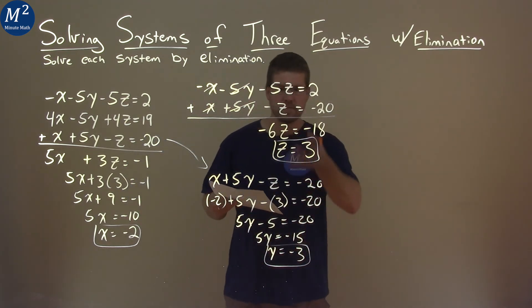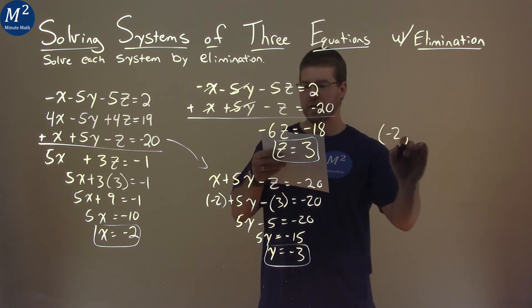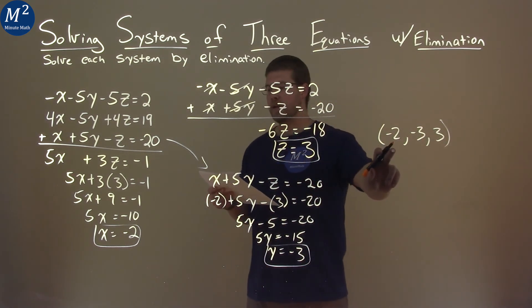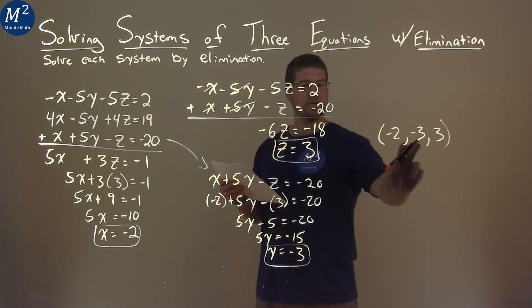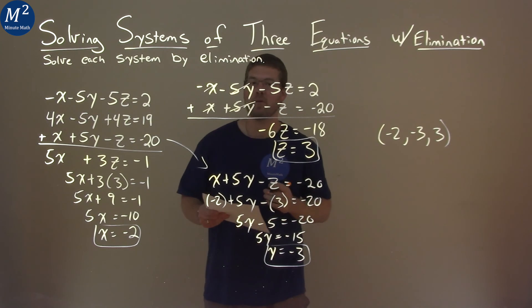So we have our 3 values. We can write it as in one statement here: negative 2 comma negative 3 comma 3. And there we have it. Our x value is negative 2, our y value is negative 3, and our z value is a positive 3. And that is our final answer.